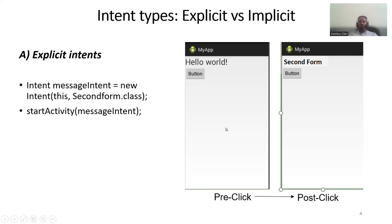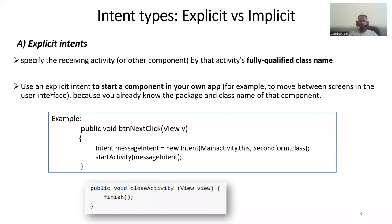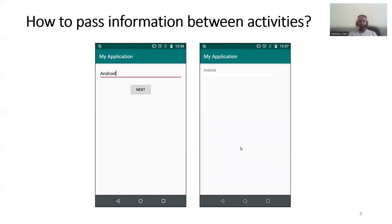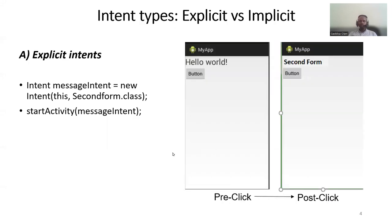This is how navigation between forms works. In the button click event you write this line of code, where the second argument specifies where you want to go. That's the core purpose of explicit intent.